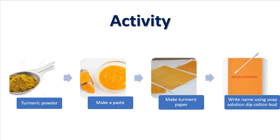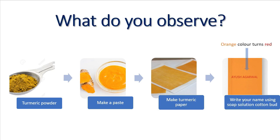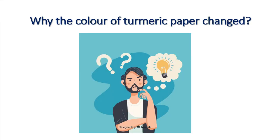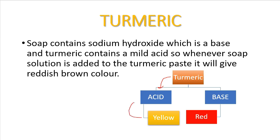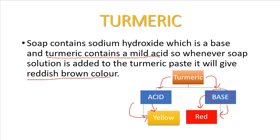After writing on turmeric paper, you can observe that the orange color actually turns red. Why does this happen? Turmeric paper in an acidic solution gives yellow color, but turmeric in a basic solution gives red color. Soap contains sodium hydroxide, which is a base, and turmeric contains a mild acid. So whenever soap solution is added to turmeric paste, it gives a reddish-brown color.